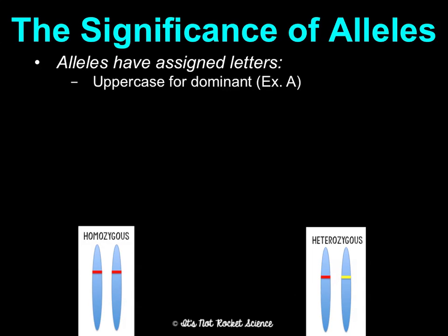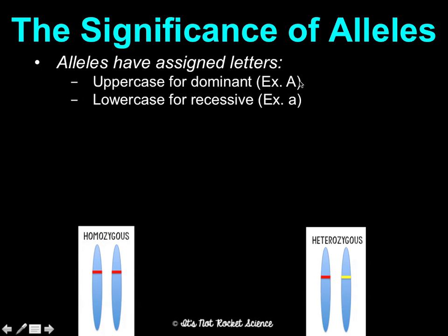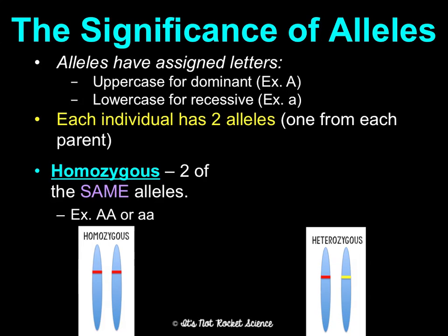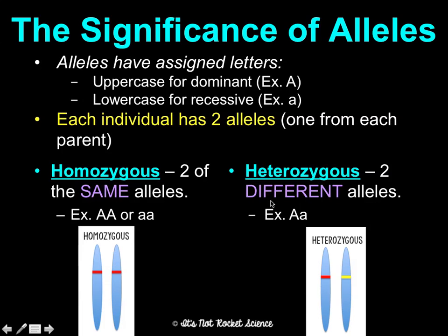We assign alleles to letters: uppercase letters represent dominant, lowercase letters represent recessive. The actual letter in the alphabet doesn't really matter — we tend to choose letters related to the trait, but it's the upper and lower case that actually matters. Each individual has two alleles, one from each parent for each trait. Homozygous means you got the same alleles — either both parents give you dominant or both give you recessive. Heterozygous is when you inherited different alleles from your parents — one parent gave you dominant and one gave you recessive.